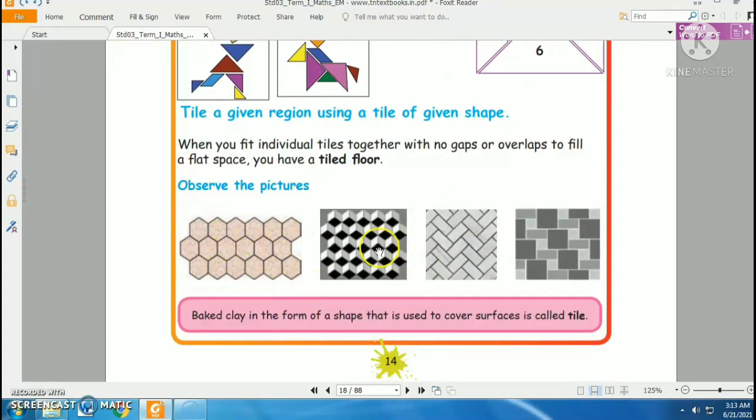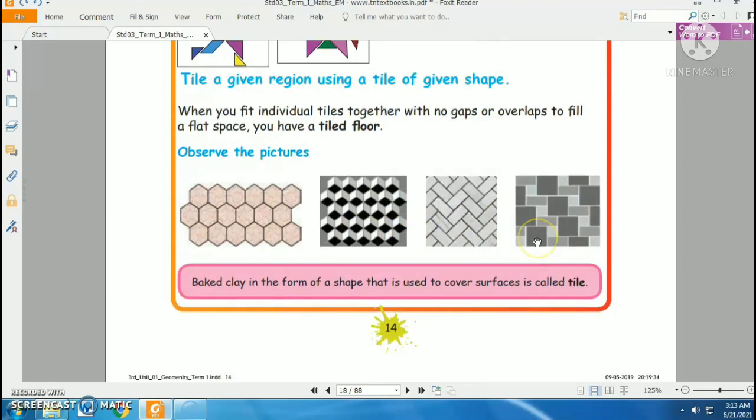Now you got the idea. Can you observe these pictures? In these pictures, different pieces are interlocked together with no gaps or overlaps, so you got a tile here, another tile here, another tile here. Now you need to know about the tile that we use to cover our ground, our floor. That tile is a baked clay in the form of a shape that is used to cover the surface.